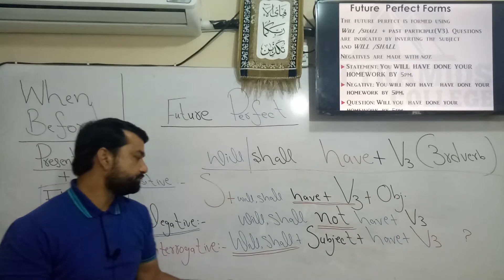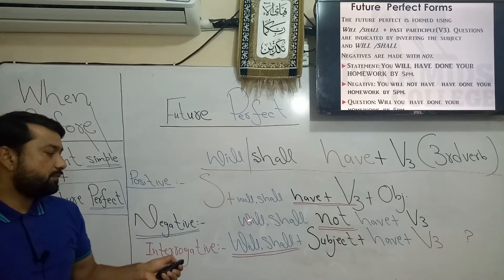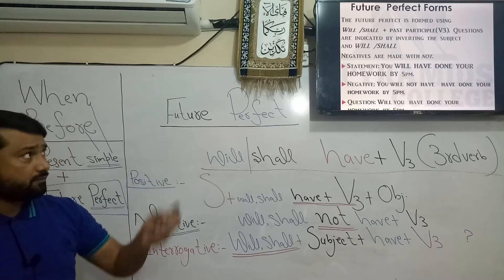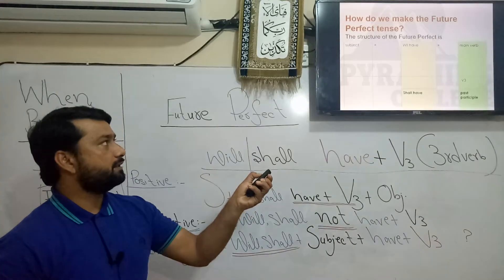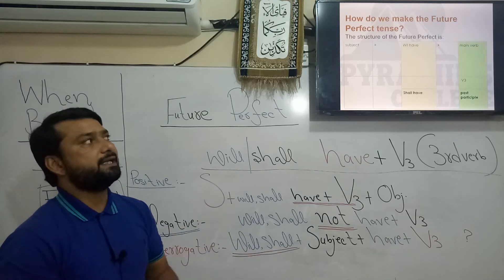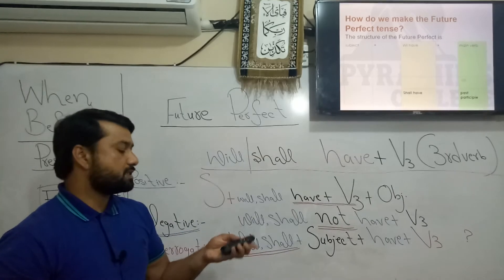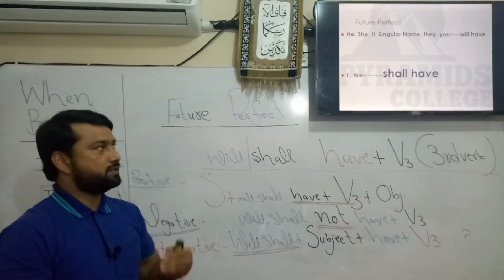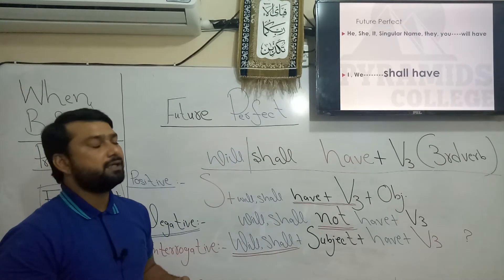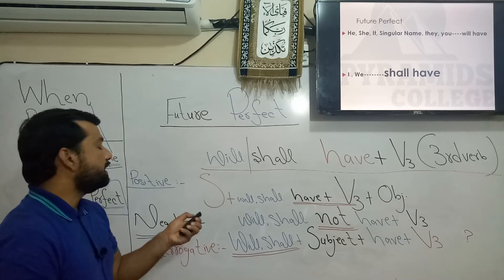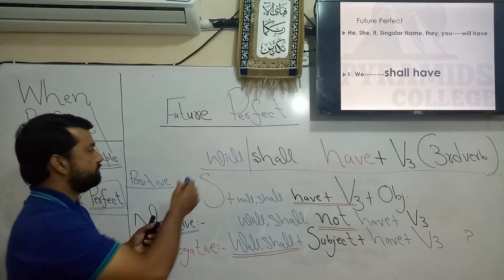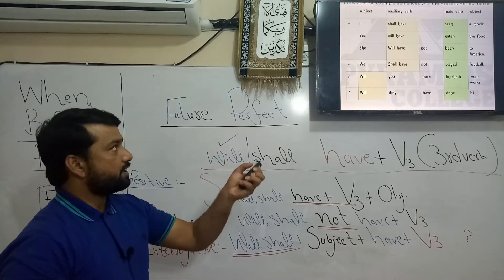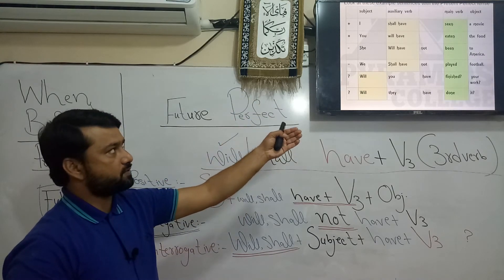For interrogative sentences, place will or shall at the beginning of the sentence, then subject, then have, and then V3. I have shown the positive, negative, and interrogative sentence structures. Whatever the subject, you are going to use 'will have' or 'shall have.' If the subject is I or we, you would traditionally use 'shall have,' but in the latest grammar, you can use 'will have' for every kind of subject.